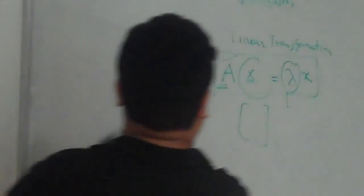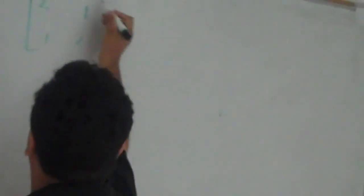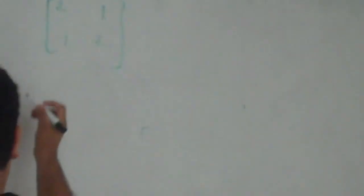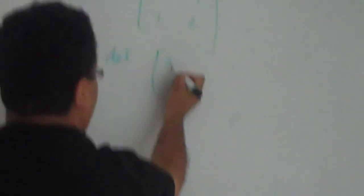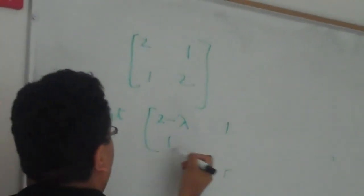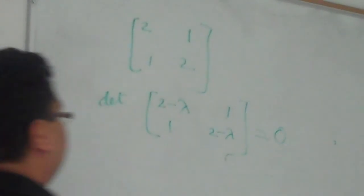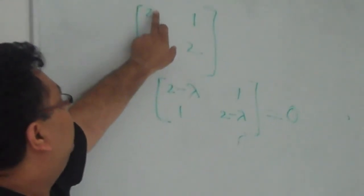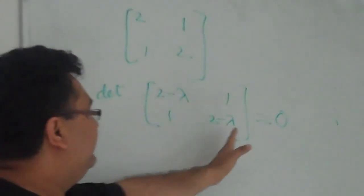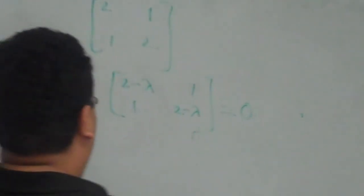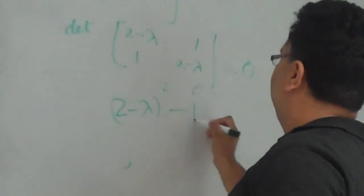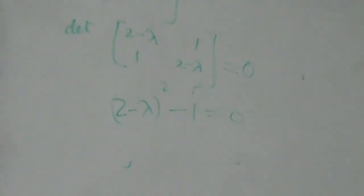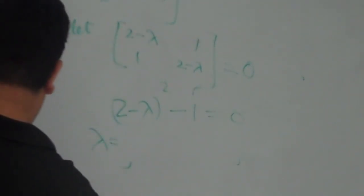Let me discuss this with a numerical example. Here is the linear transformation. To find the eigenvalue, the method is: take the determinant of (A minus lambda times I) and set it equal to zero. You subtract the eigenvalue lambda from the diagonal and compute the determinant equal to zero — that gives you the eigenvalue. For this example: (2 minus lambda) squared minus 1 equals zero. Solving this, the eigenvalue gives two values: either 1 or 3.